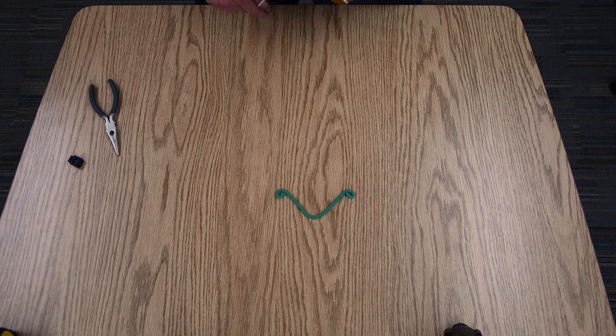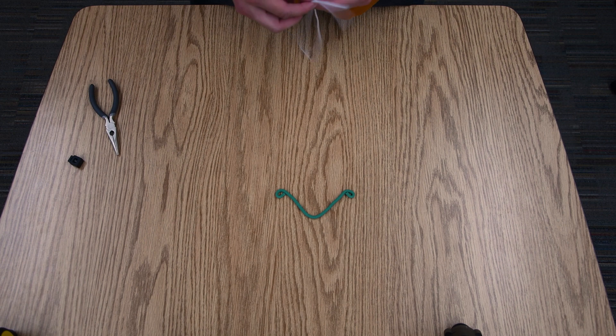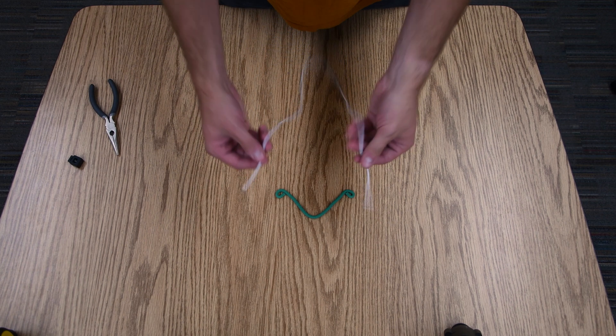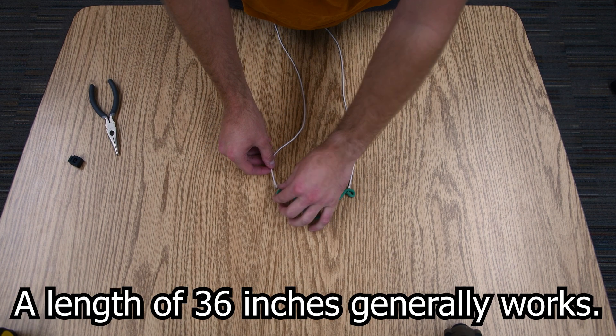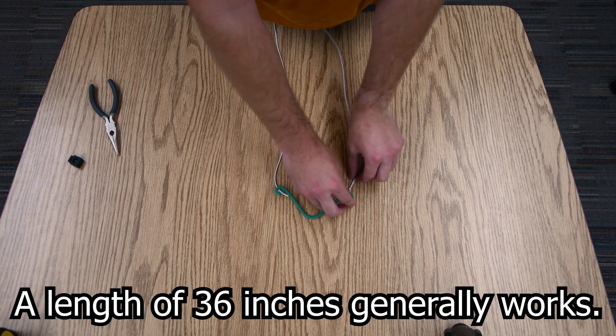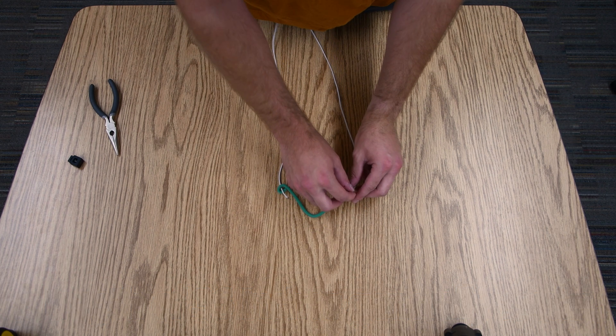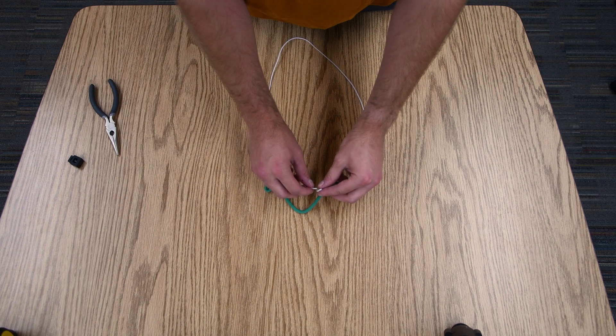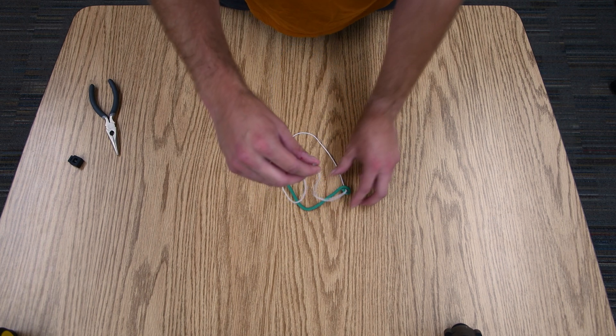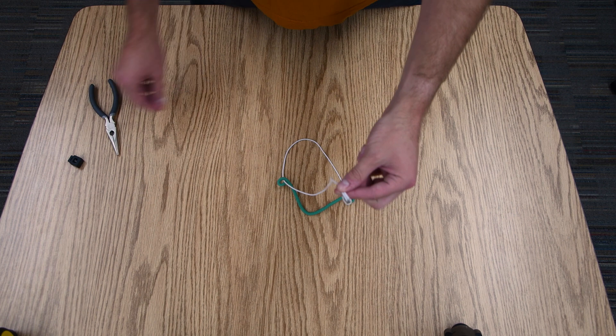Next what we'll do is add the elastic material. So here I have the elastic material. We're going to feed it through the loops like this. Grab both ends.